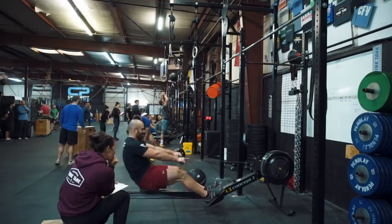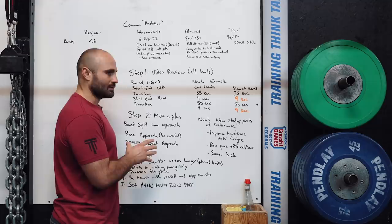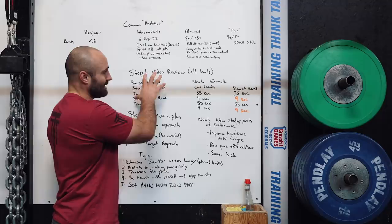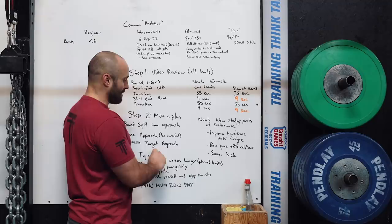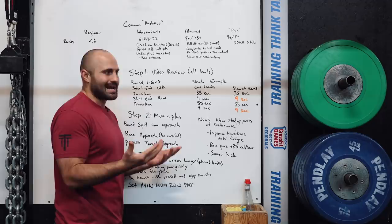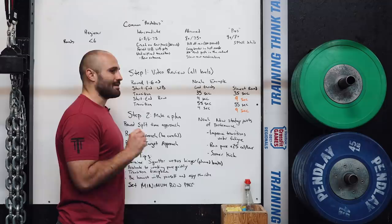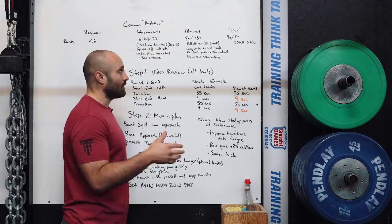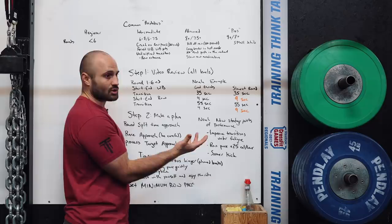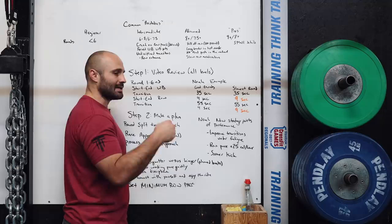If you have too much focus on the outcome of the workout, it makes it very difficult to perform. Based on Noah's video review, his new process-target approach focuses on three things: improve transitions under fatigue — no towel breaks, just let the ball get sweaty since it's not a barbell that'll slip; increase his minimum row pace by 25 calories per hour, which could be about one second per row round, potentially five more wall balls; and start his kick one interval earlier on the final row. These are the process targets Noah will focus on in his second attempt.